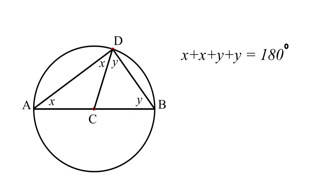Now let's use some basic algebra. X plus X gives us 2X, and Y plus Y gives us 2Y. So 2X plus 2Y equals 180 degrees.